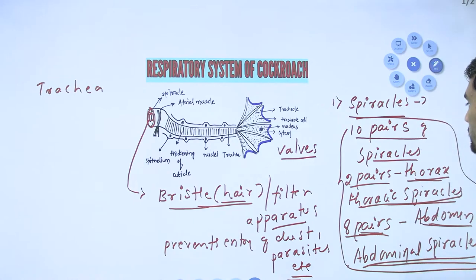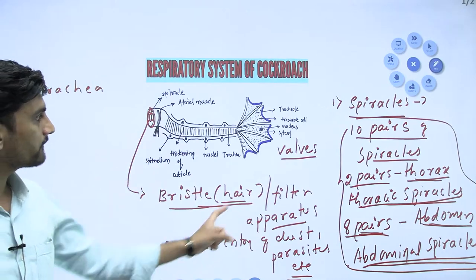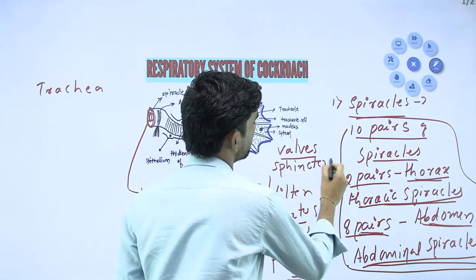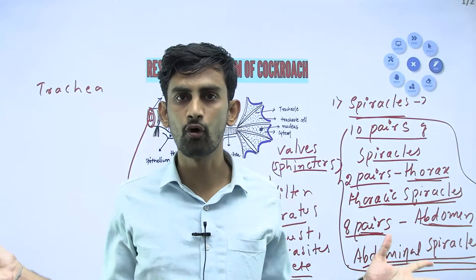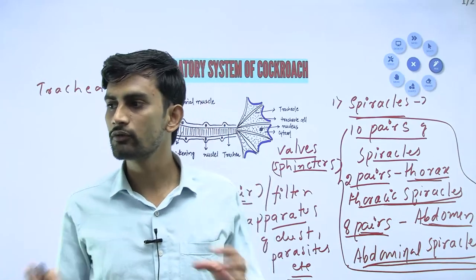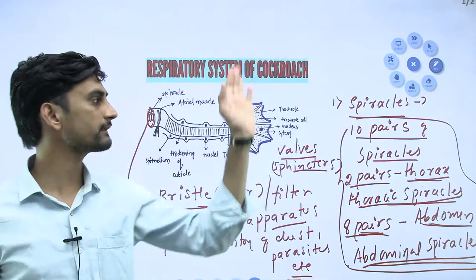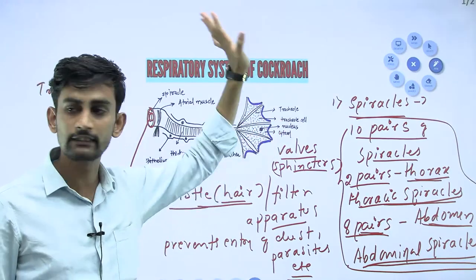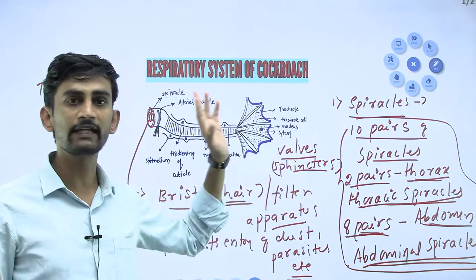The spiracles have walls called sphincters - a ring of muscle that guards the opening and closing of the spiracle. By opening and closing these spiracles, atmospheric air can easily enter into the tracheal system. This opening and closing of the sphincter is the main important function of the spiracles.